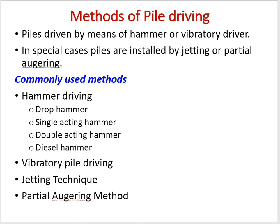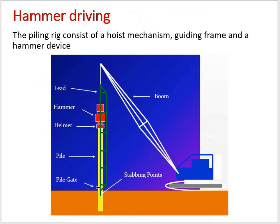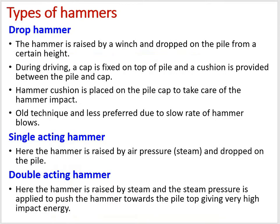Hammer driving is a very conventional and old method. You have a hoist mechanism — a boom — with a guide, a hammer, and a helmet placed on top of the pile. The hammer falls on a cushion to protect the pile. This is a straightforward method: from a certain height, you make the hammer fall down by gravity.